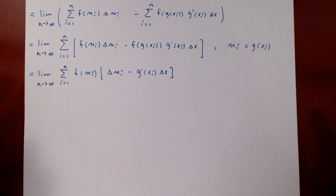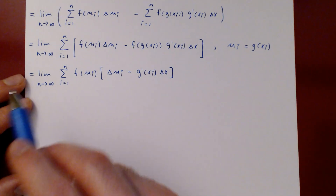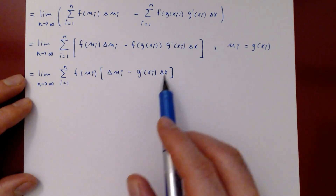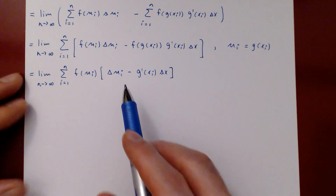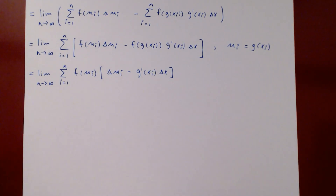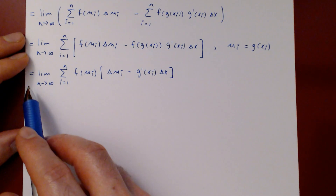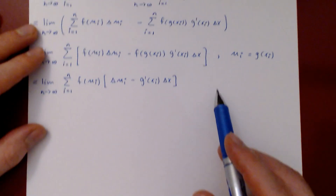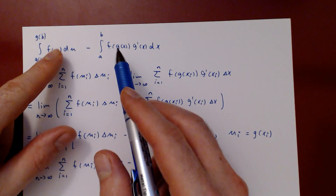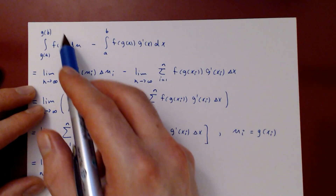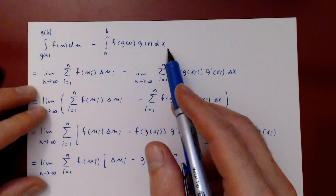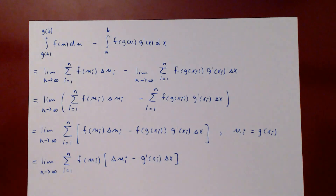We will stop here and in the next video do more work on this expression to show that the limit of f(u_i)(delta u_i minus g'(x_i) delta x) equals zero. If this limit equals zero, then the difference of the two integrals is zero, and therefore the new integral and the original one must be equal.